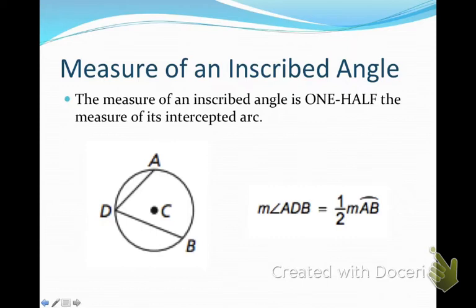One of the theorems says the measure of an inscribed angle is exactly one-half the measure of the intercepted arc. So in our diagram here, angle ADB is exactly one-half of the measure of arc AB.